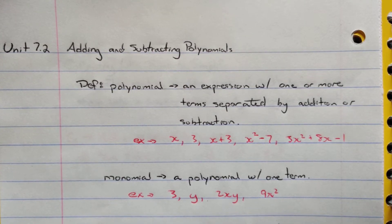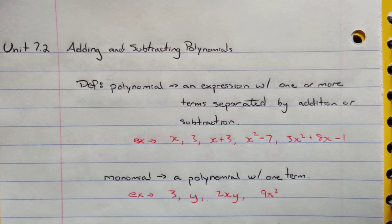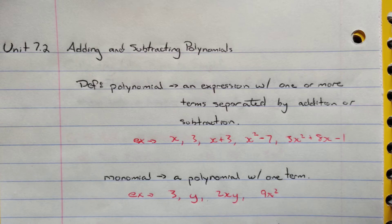We're going to look at adding and subtracting polynomials. Since algebra has a lot of new content, we have more definitions to cover. A polynomial is an algebraic expression — something without an equal sign — with one or more terms separated by addition or subtraction.